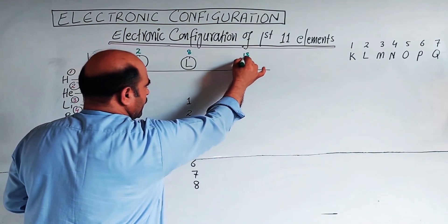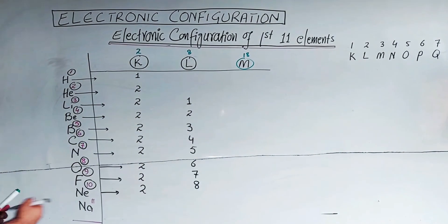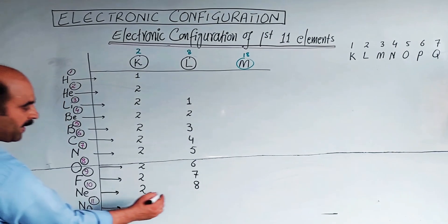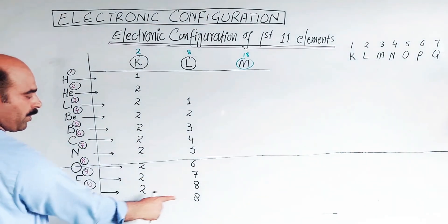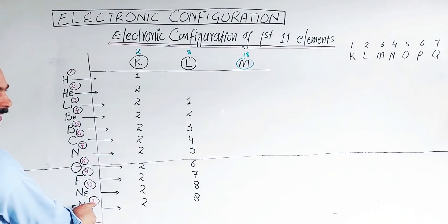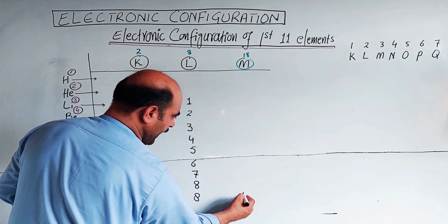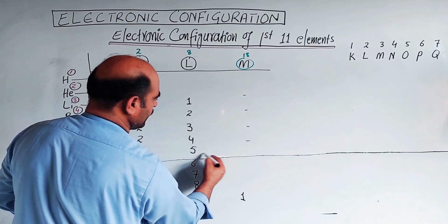Sodium: atomic number 11. The electronic configuration is 2, 8, 1. Two electrons in the first shell, eight in the second shell because it's complete, and the remaining one goes to the third shell. This is the electronic configuration pattern.